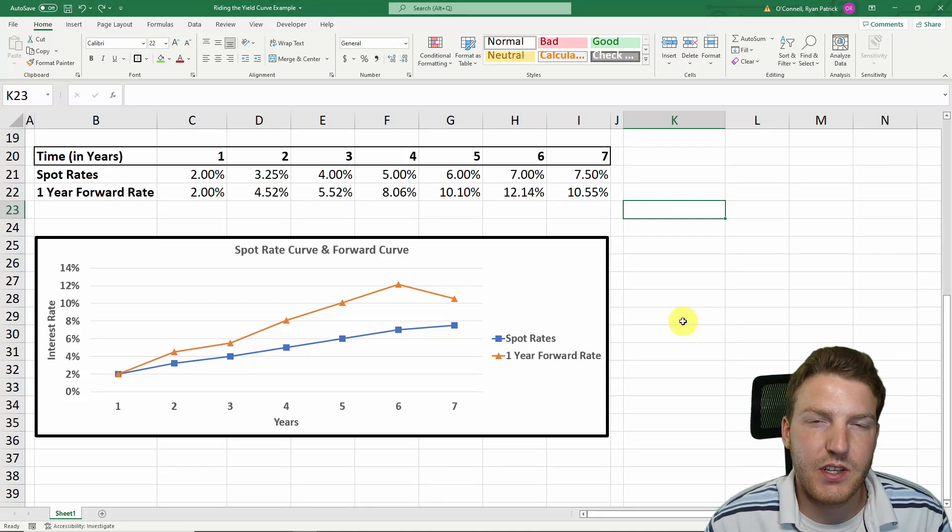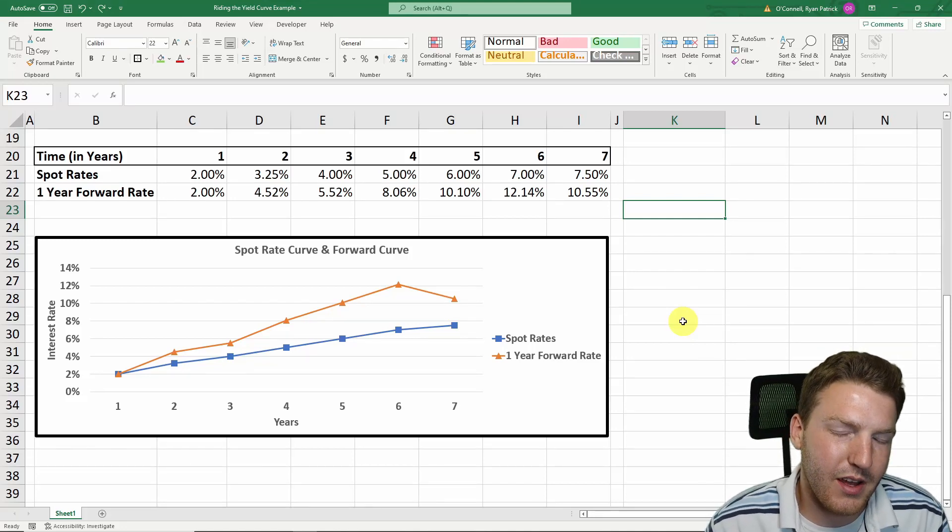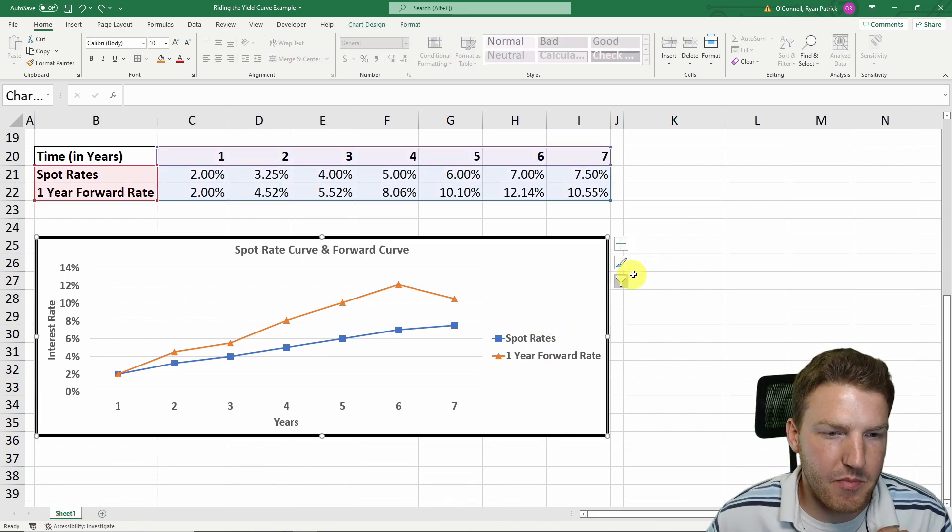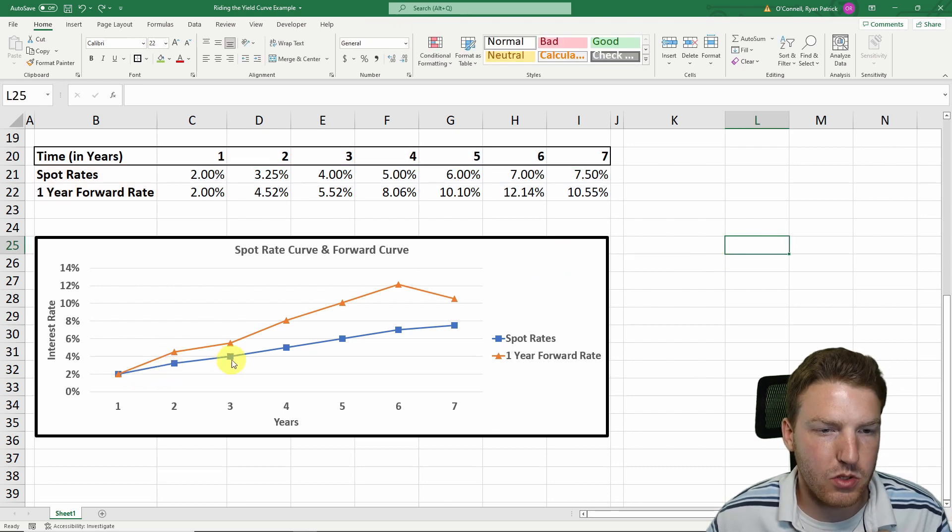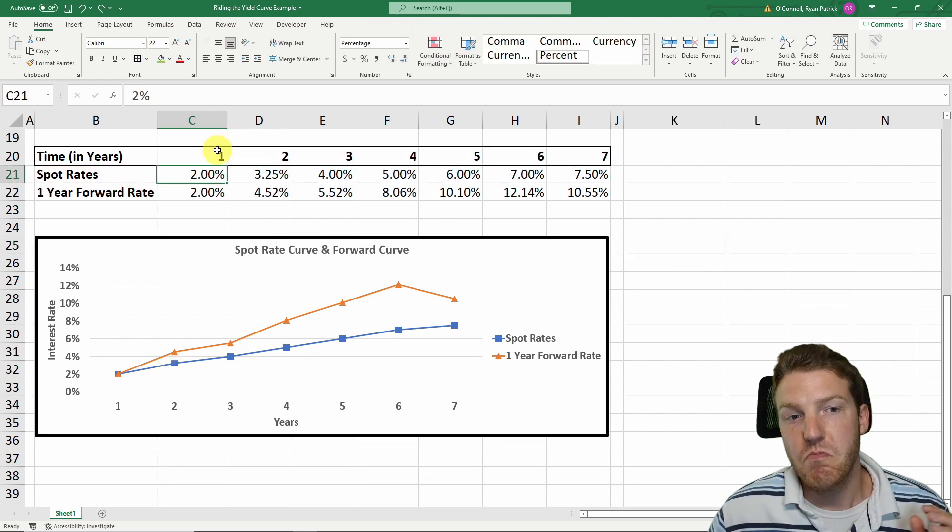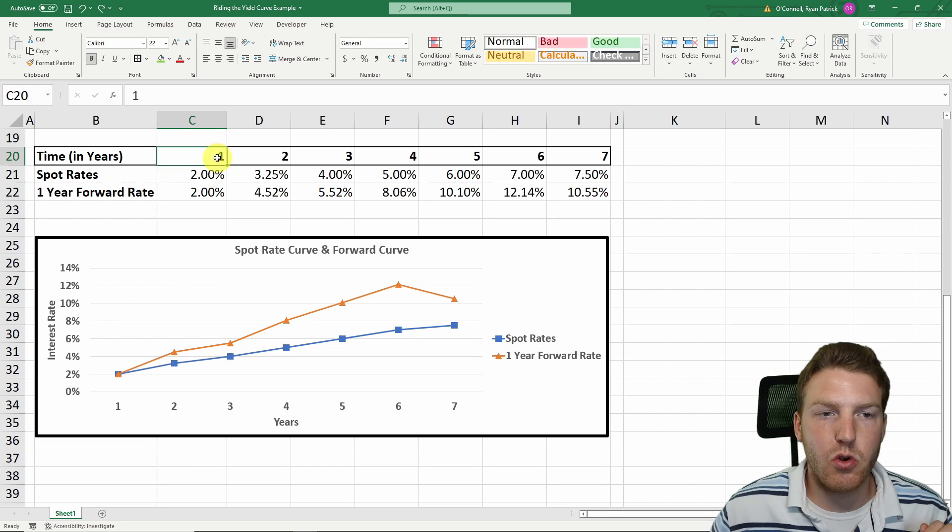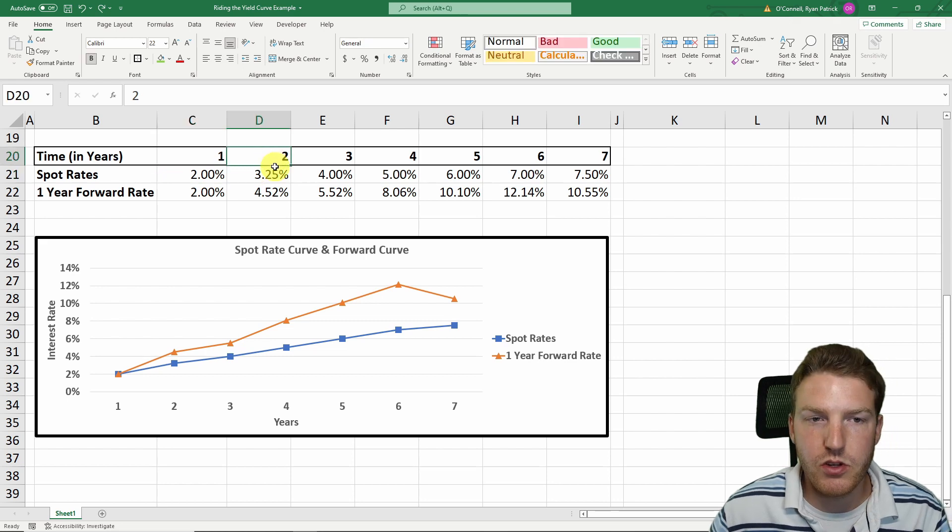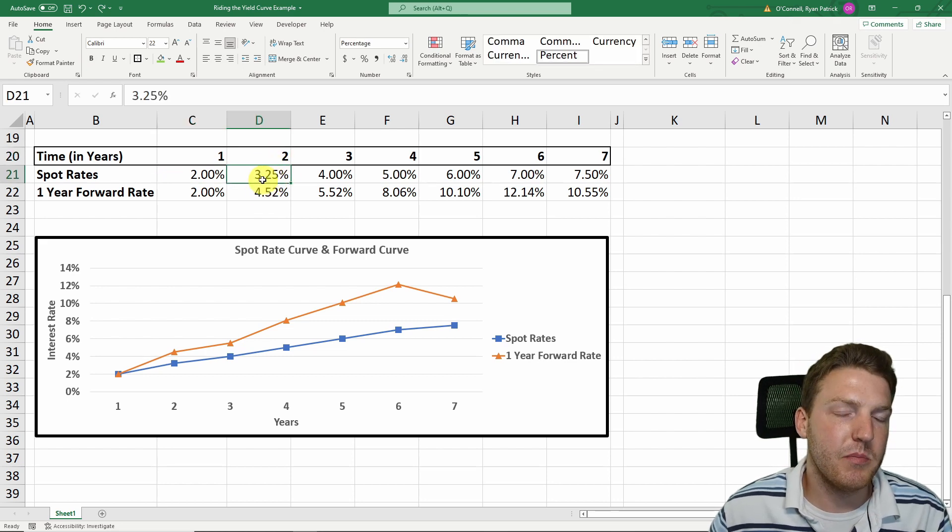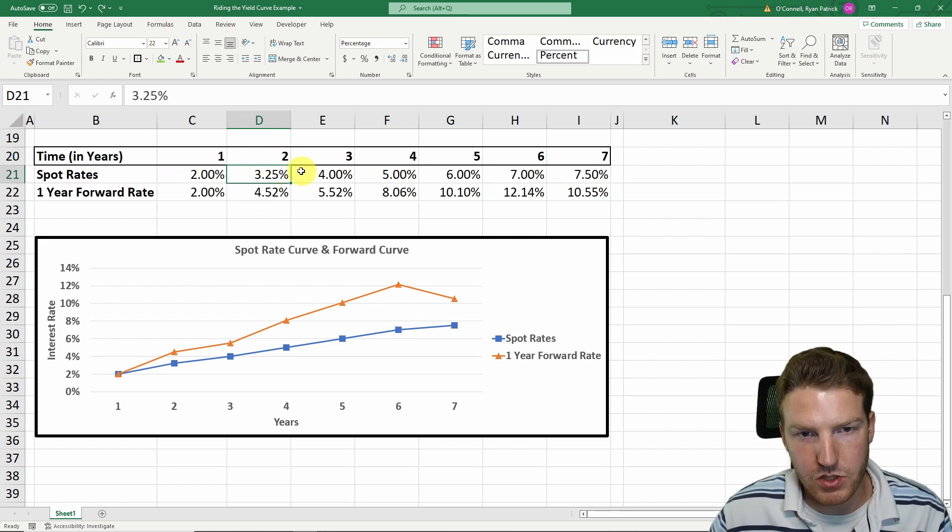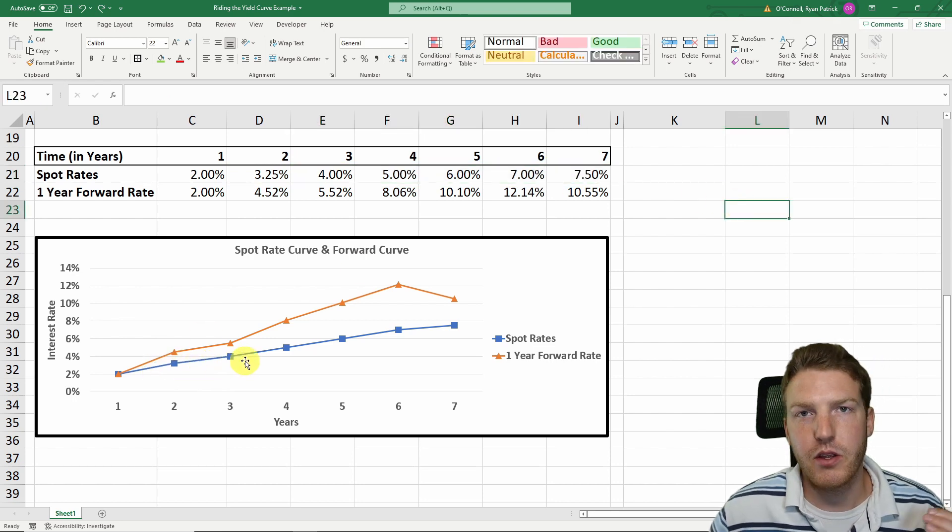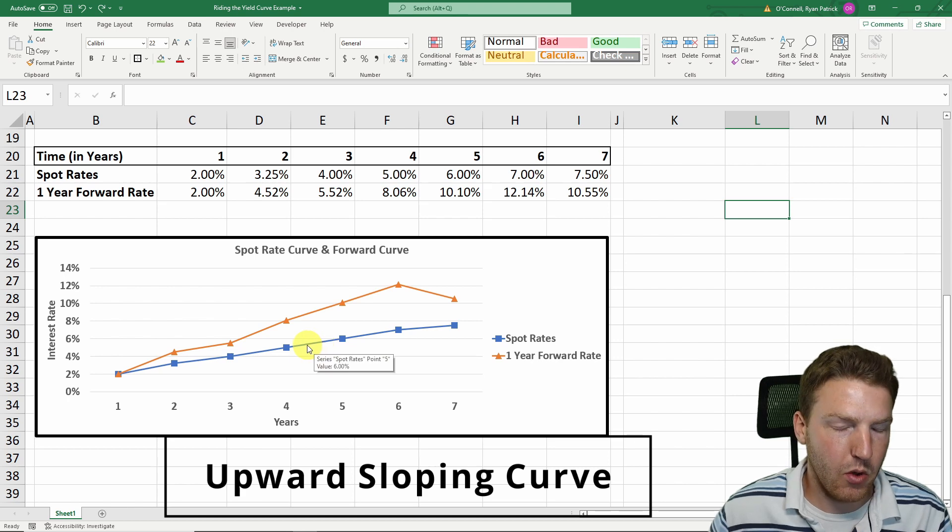Riding the yield curve is a fixed income trading strategy that requires a few conditions for it to actually work. On this graph, I've mapped out the actual spot curve in the blue line. For a one-year zero-coupon bond, we could discount it at a rate of 2%. For a two-year zero-coupon, we could buy that at a rate of 3.25%, and so on. The spot rate curve that I've drawn out here is actually upward sloping.